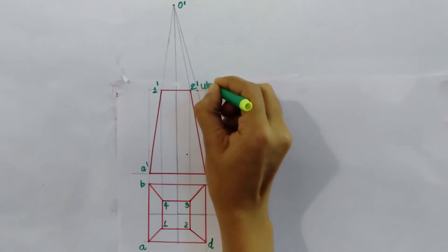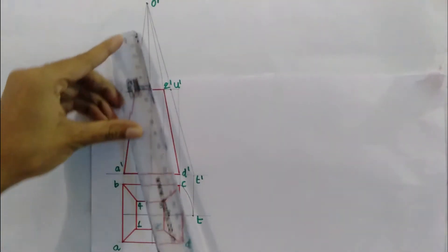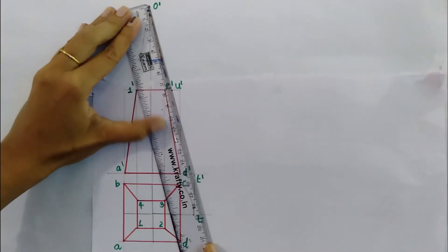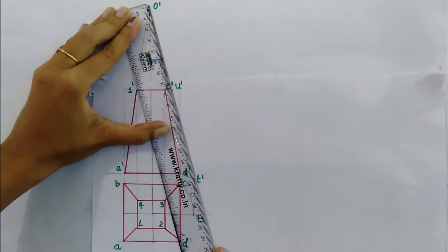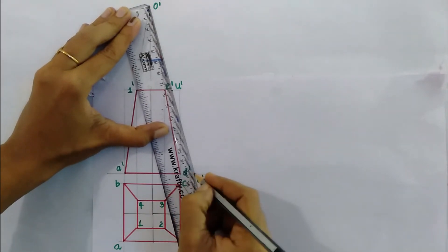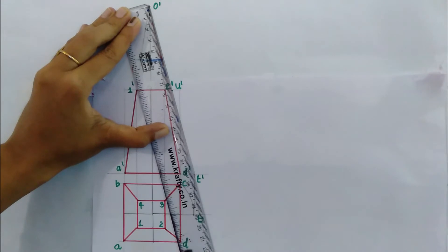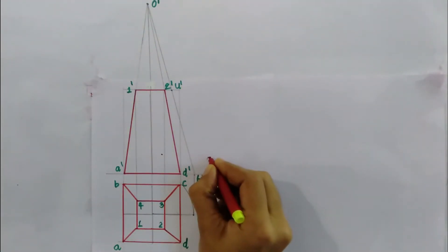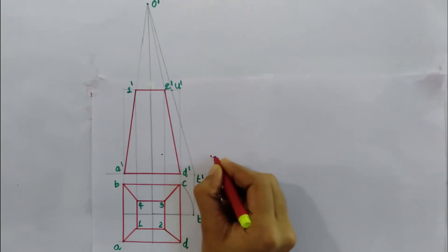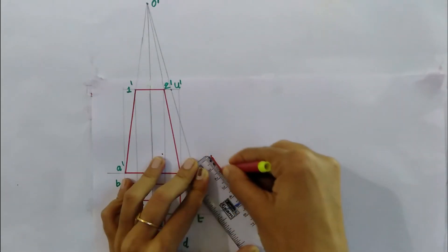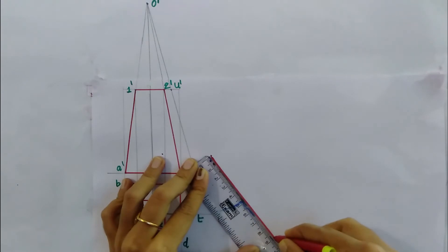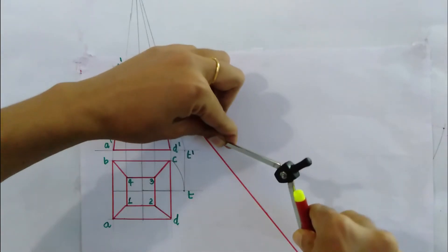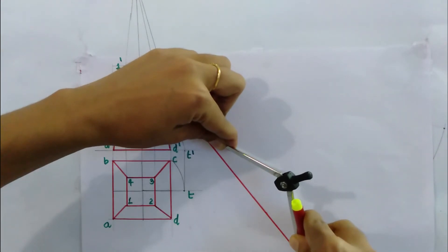The true slant length is found. Mark development point O' and T'. Measure the slant length - it is 155 mm. Select the center point O' and draw the arc for the development.